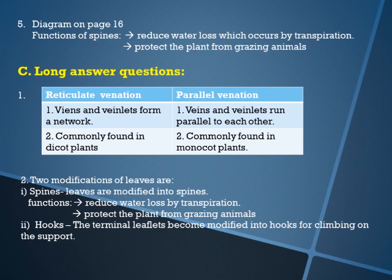Now we come to the long answer questions. How is parallel venation different from reticulate venation? In reticulate venation, veins and veinlets form a network, whereas in parallel venation, veins do not form a network — they run parallel to each other. Reticulate venation is commonly found in dicot plants, while parallel venation is commonly found in monocot plants.